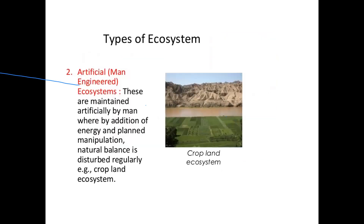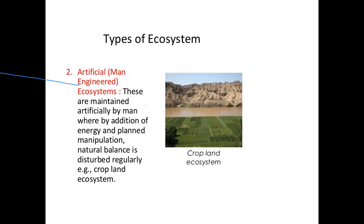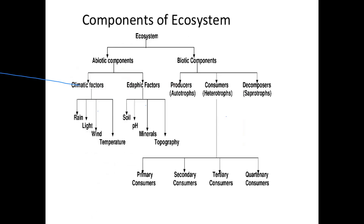Artificial ecosystems are operated by human beings and maintained artificially through addition of energy and plant manipulation, regularly disturbing the natural balance. Examples include cropland ecosystems and aquariums, where we supply the material and energy for the growth of species. These are the components of the ecosystem.